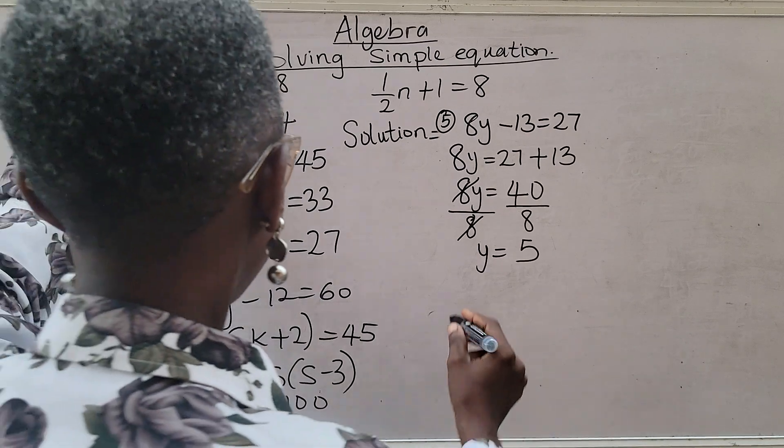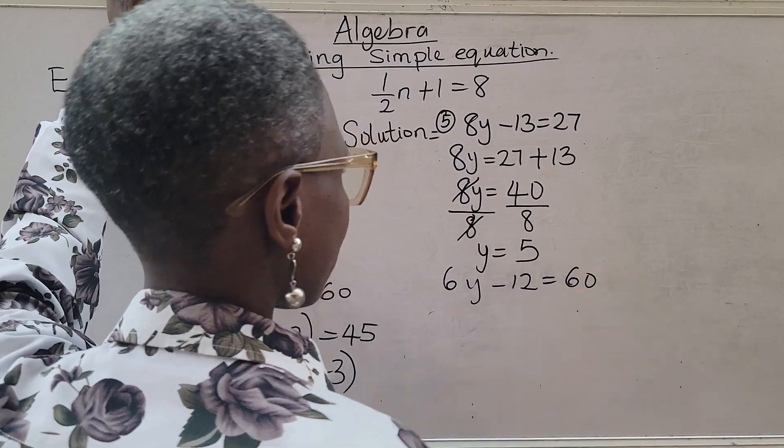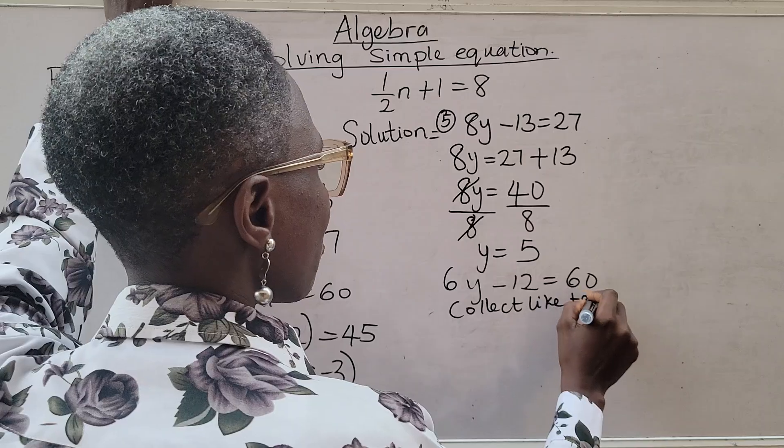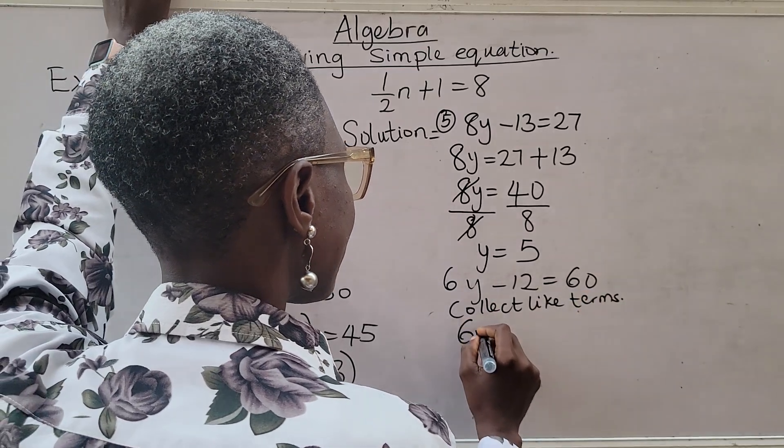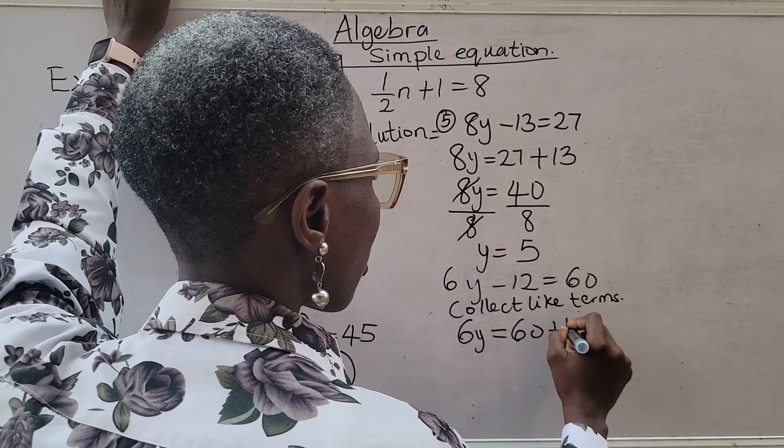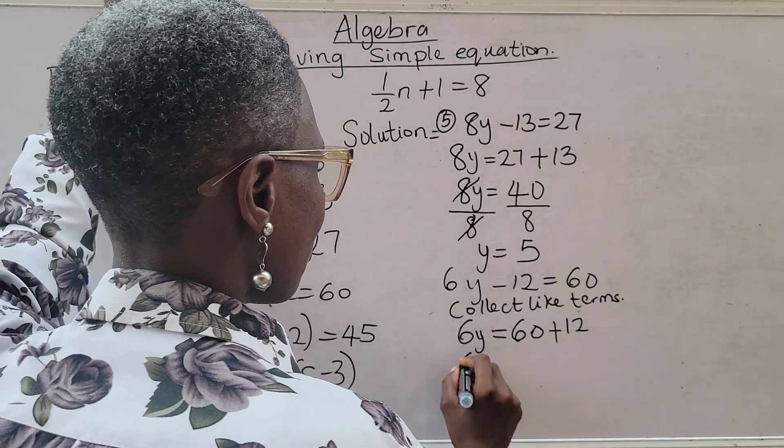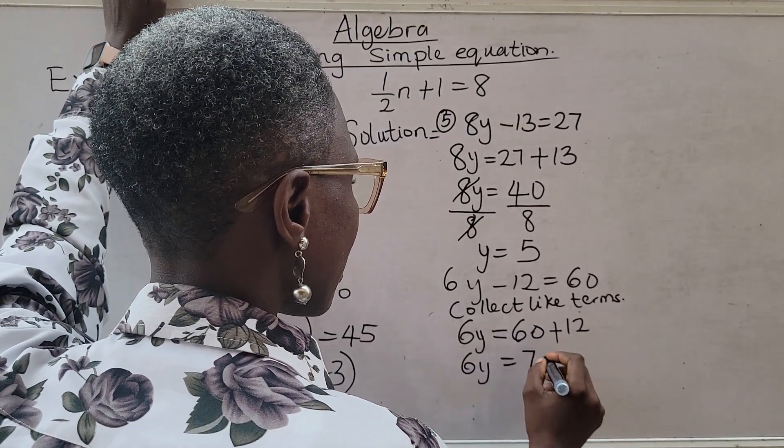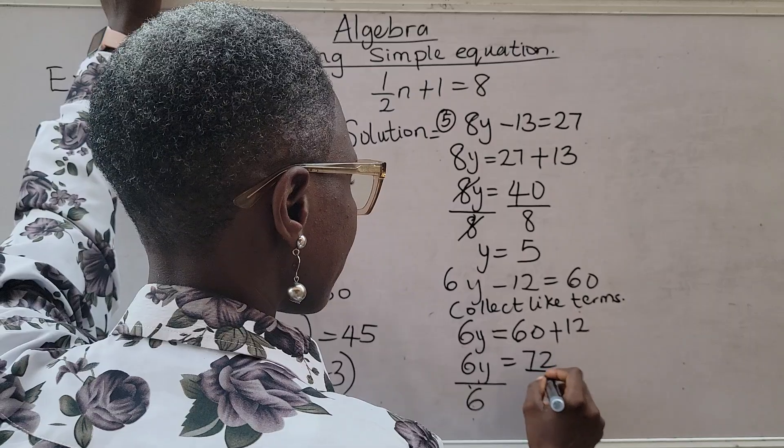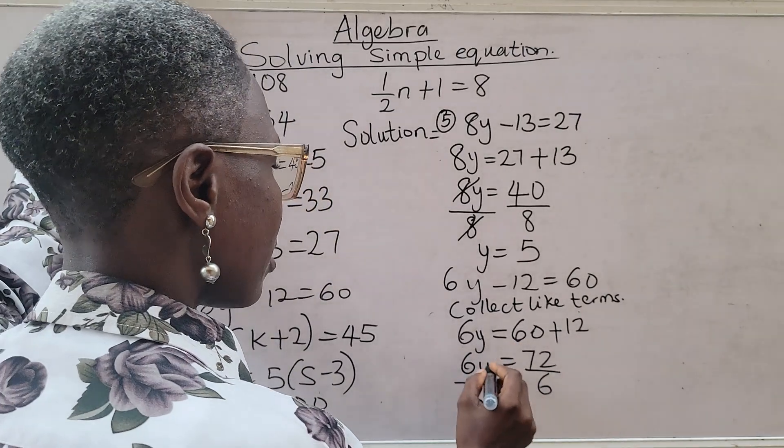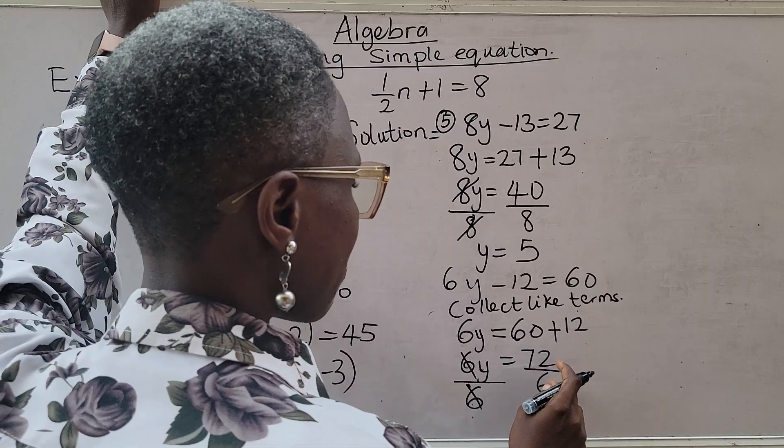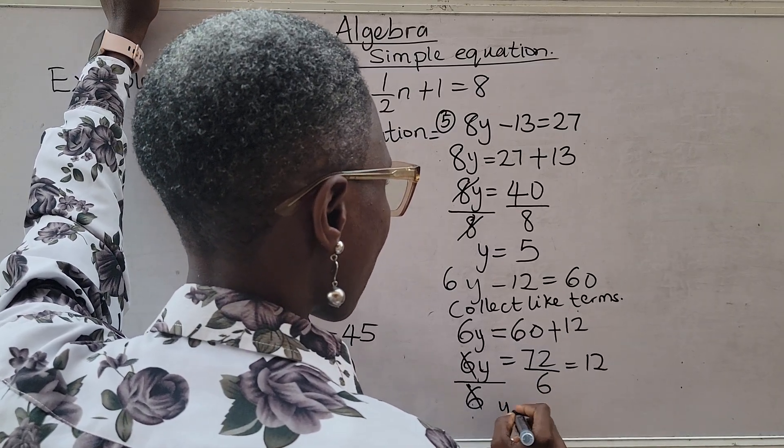Now another example like it. We have 6y minus 12 equals 60. Now we can now do what? Collect like terms. Just like we've been doing. We are bringing the same family together. 6y is here. It's equal to 60. This minus 12 is going over to that place. So it's going to be plus 12. So the moment you get that we have 6y, 60 plus 12. That is 72. Now we divide both sides by the coefficient of y. Both sides. Whatever you do to this side must be done here. So we have 6 is canceling 6. 72 divided by 6. That is 12. So that means our y is 12.